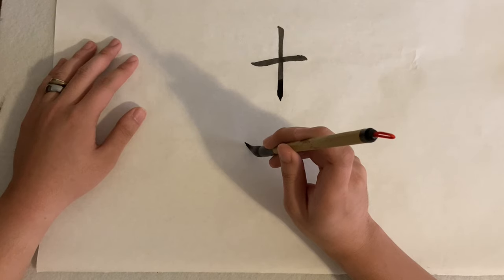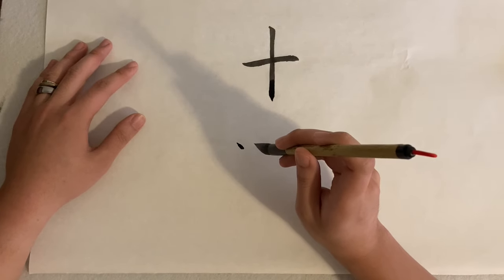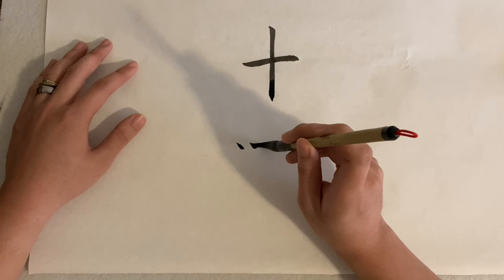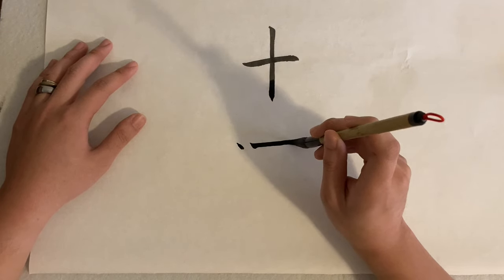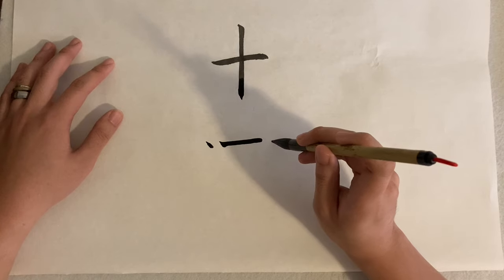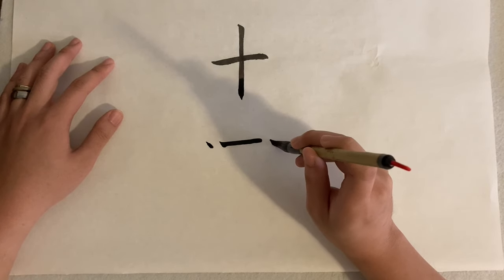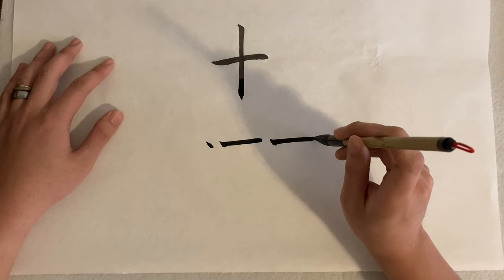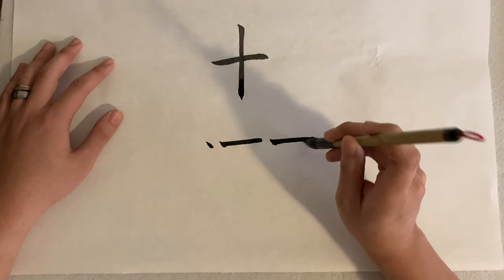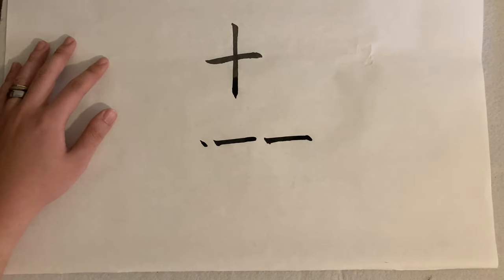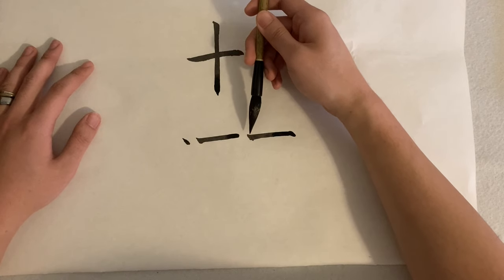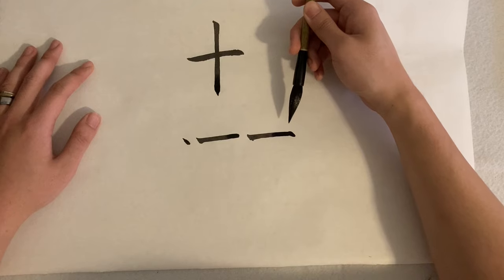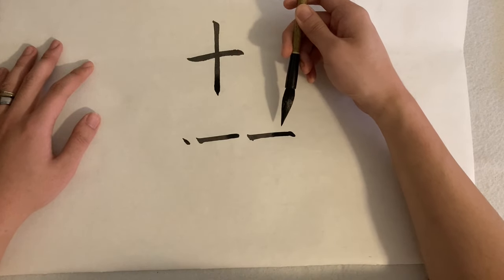In this one, we have three parts. Landing, dragging, and finishing. The pressure of the brush also varies when doing this stroke. Let me demonstrate. For the first part, press down and drag the brush. Lift, press down, and hook back a little.